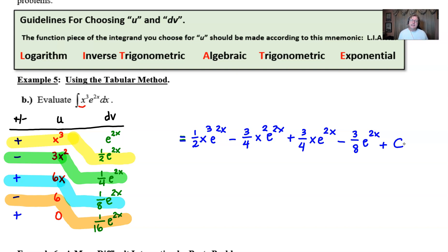One thing I can't emphasize enough, the tabular method is a wonderful tool but it only works whenever one of the pieces is algebraic like an x, x squared, x to the third, x to some positive integer exponent per se.